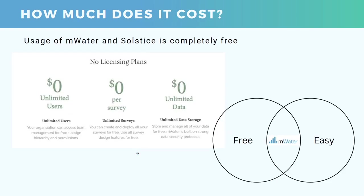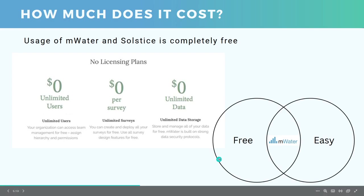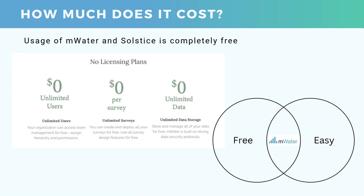The next question we often hear is: how much does it cost to use a platform with so many features that mWater and Solstice have? Well, the answer is that usage of mWater and Solstice is completely free. That means you can add unlimited users, collect as many sites, surveys, assets, and pieces of data that you need, as well as as many images. There's not going to be a limit — we're really aiming for this overlap between a system that is both free to use and easy to use. You do not need a tech expert to run open source code on your own server, and neither do you need to pay for somebody to host these things for you.